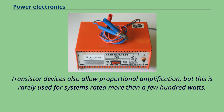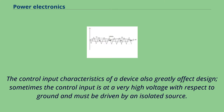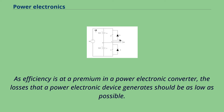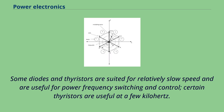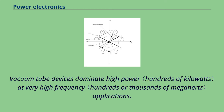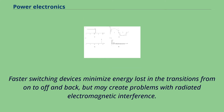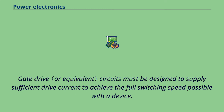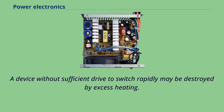Transistor devices also allow proportional amplification, but this is rarely used for systems rated more than a few hundred watts. The control input characteristics of a device greatly affect design; sometimes the control input is at a very high voltage with respect to ground and must be driven by an isolated source. As efficiency is at a premium in a power electronic converter, losses should be as low as possible. Some diodes and thyristors are suited for relatively slow speed and are useful for power frequency switching and control; certain thyristors are useful at a few kilohertz. Devices such as MOSFETs and BJTs can switch at tens of kilohertz up to a few megahertz in power applications. Gate drive circuits must be designed to supply sufficient drive current to achieve the full switching speed possible with a device.